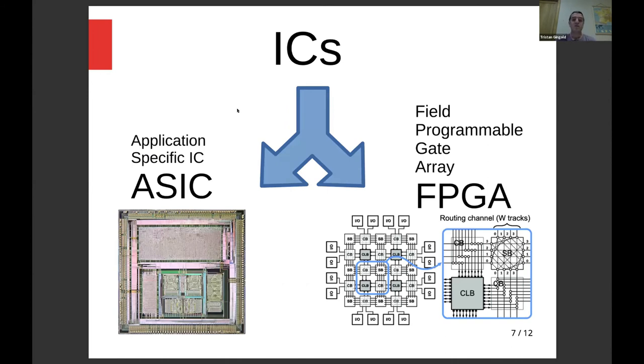And often you have to use also some tools to check the timing or to check the design rules. I will also artificially split ICs into two branches. So you have either the on one hand, the ASIC, which is application-specific circuit, which is, let's say, a real circuit.